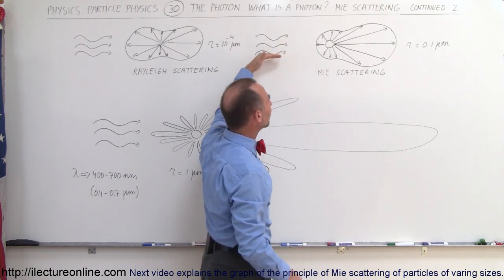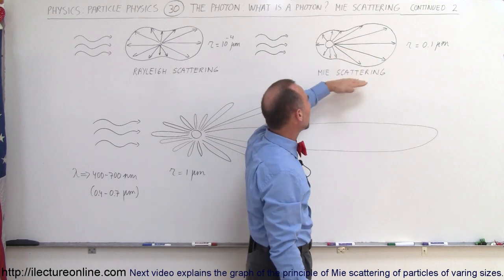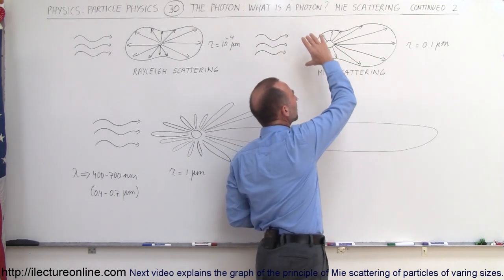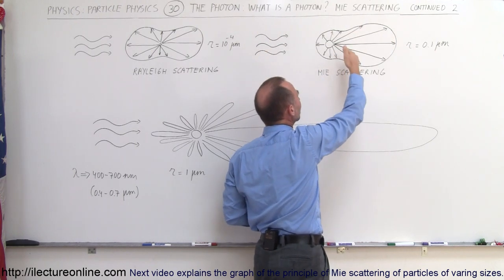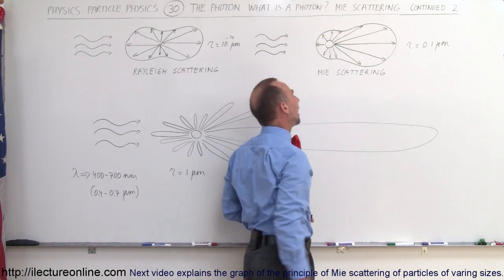Then you can see that the scatter becomes more directional. So we call it Mie scattering, and the predominant amount of light gets scattered forward in the forward direction, the same direction as the incoming photons, and less light gets scattered to the sides and backwards.